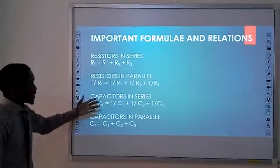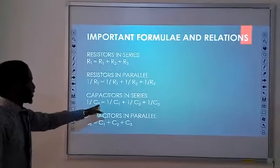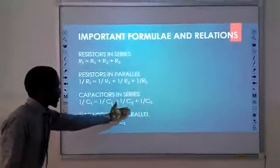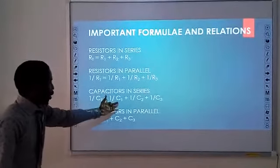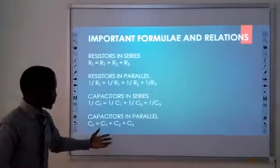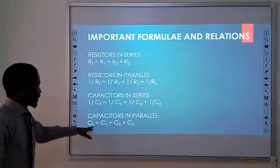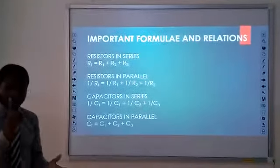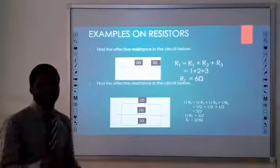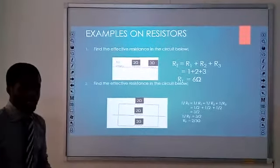We also have capacitors in a circuit. When capacitors are in series, we use 1 over CT, where CT is the effective capacitance. So for three capacitors: 1 over CT equals 1 over C1 plus 1 over C2 plus 1 over C3. When capacitors are in parallel, we add all the capacitances together to get the total or effective capacitance. Note: effective resistance is the same as total resistance, and effective capacitance is the same as total capacitance. They refer to the same values.